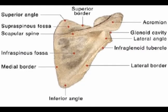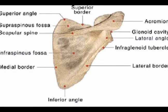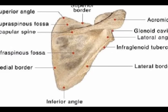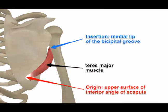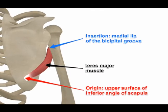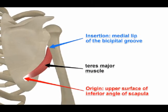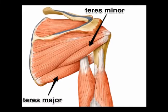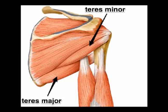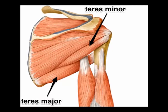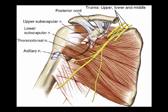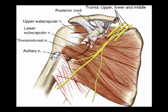The teres major muscle originates on the posterior surface of the inferior angle of the scapula. It inserts into the medial aspect of the intertubercular groove of the humerus. The concentric actions of the teres major are adduction and internal rotation of the shoulder. It is innervated by the lower scapular nerve from vertebral levels C5 and C6.